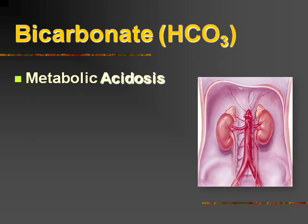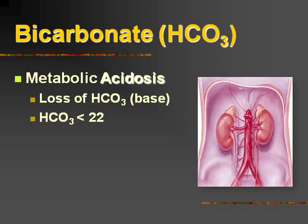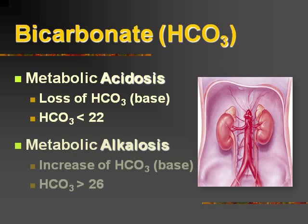When we talk about bicarbonate or the HCO3, if we're going to talk about a metabolic acidosis, the pH is going to be less than 7.35, and we're going to have a loss of bicarb or a loss of base, so our bicarb on the ABG is going to be less than 22. If we have a metabolic alkalosis, the pH being greater than 7.45, we're going to have an increase in our bicarb or increase in the base, so the HCO3 will be greater than 26.